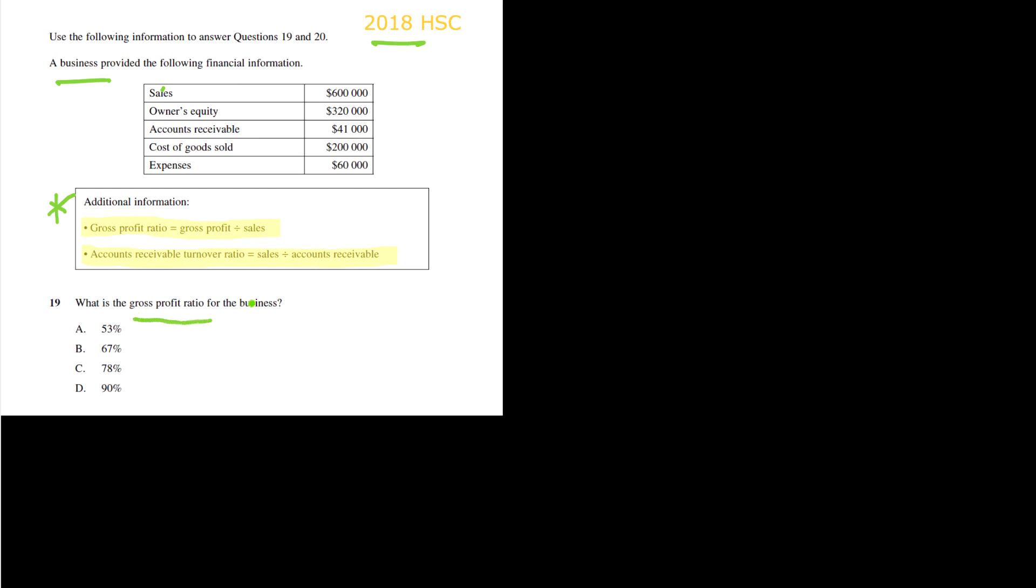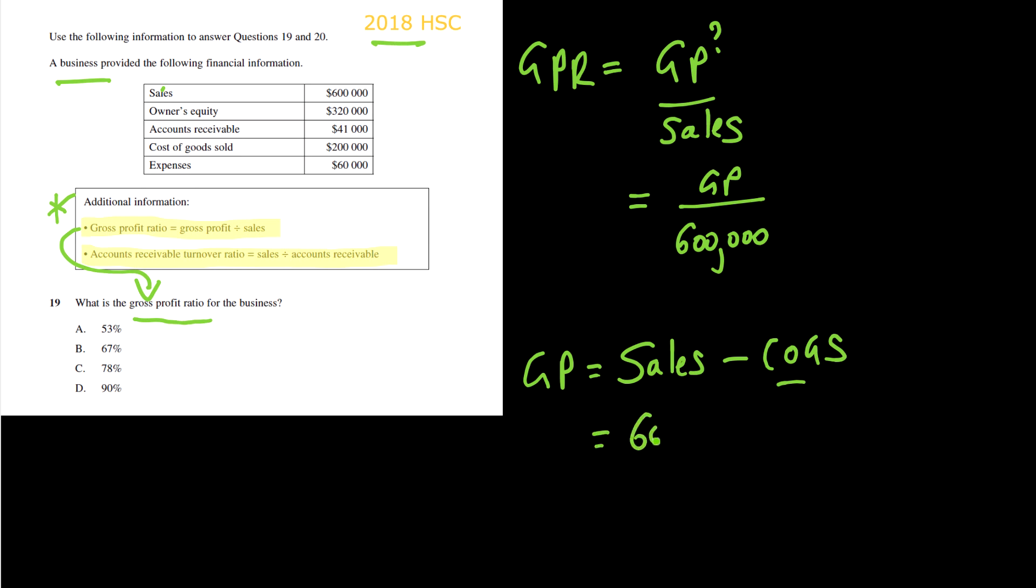Let's look at the question. What is the gross profit ratio for the business? So what's very helpful is that they have given us the formula. We're starting to see where this question is going. Because if you look here, there is no figure for gross profit, but there is one for sales. So we're still looking for gross profit, but we know that sales is 600,000. We need to remind ourselves how we calculate that. It's sales minus the cost of goods sold. So it's not net profit, which is sales minus all expenses. It's just minus COGS here. So in this case, it would be 600,000, that whole sales figure, minus the cost of goods sold, which here is 200K.